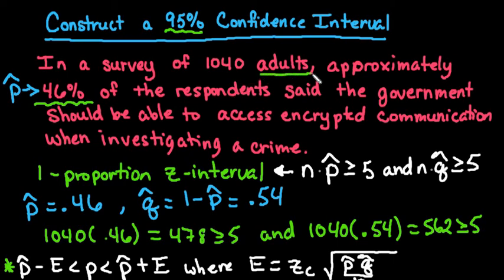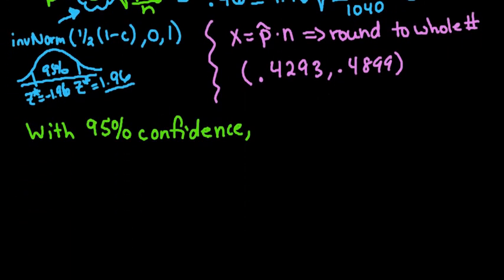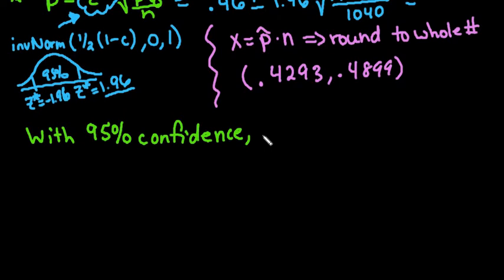When we are writing this out, we would say with 95% confidence, the proportion, in this case we're talking about a percentage or a proportion of adults.